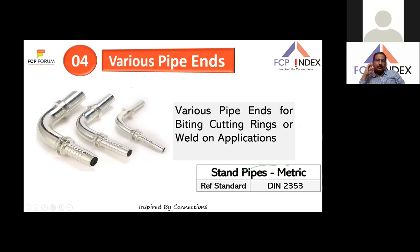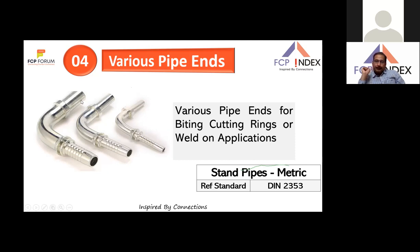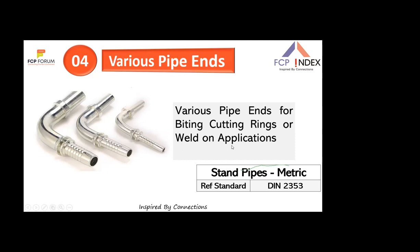Pipe end connections — commonly called tank pipe or bee nipples — use bite rings (also called cutting rings or ferrules) to bite into the tube. This is another popular connection type conforming to DIN 2353.